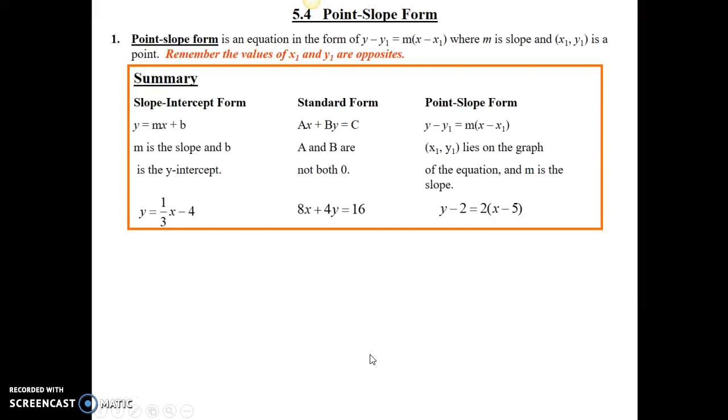Hey students, this is Mr. Boyd. Today we want to first review slope-intercept form, where m is the slope and b is the y-intercept. Standard form is ax plus by equals c, where we find the x-intercept and y-intercept to graph it. And today we want to look at one more form, which is called point-slope form, where you actually have a point and a slope.